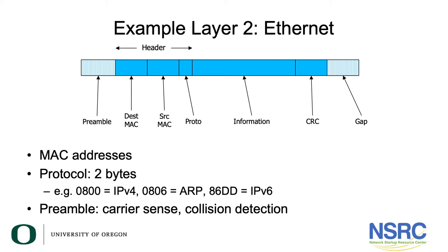This looks very much like the PPP frame, but the difference is we now have destination and source MAC addresses, because Ethernet is an access network with multiple devices on the same network, whereas PPP is point-to-point — there's a device at one end and a device at the other, and those are the only two devices involved. Ethernet also uses the preamble at the start of the frame for carrier sense and collision detection. In the old Ethernets with hubs, that period of time was used to detect whether somebody else was transmitting at the same time.